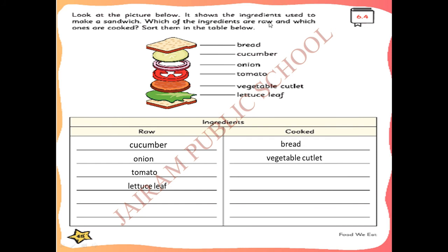Look at the pictures below - it shows ingredients used to make a sandwich. Which of the ingredients are raw and which ones are cooked? Sort them in the table below. The ingredients are: bread - B-R-E-A-D, cucumber - C-U-C-U-M-B-E-R, onion - O-N-I-O-N, tomato - T-O-M-A-T-O, vegetable cutlet - V-E-G-E-T-A-B-L-E cutlet, and lettuce leaf.